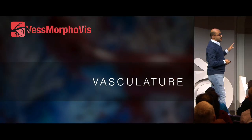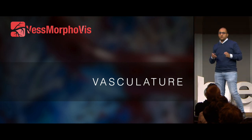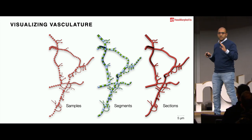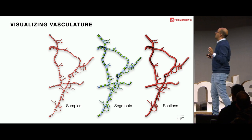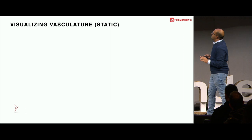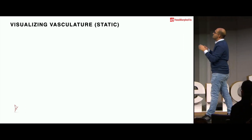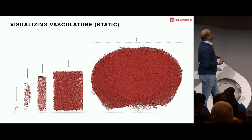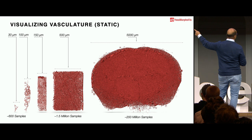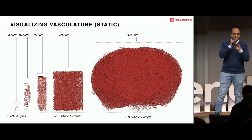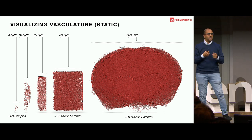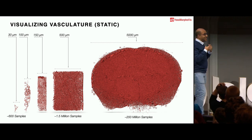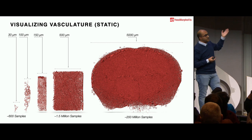The last thing is vasculature, which is a different add-on because neurons are different from blood vessels. Blood vessels have a similar structure but with cyclic graphs, unlike neurons which have acyclic ones. The main difference is scale - blood vessels can range from just 600 samples to 2 million samples across an entire mouse brain. We packed everything in one single object and visualized it in one go, making operations run in near real-time.